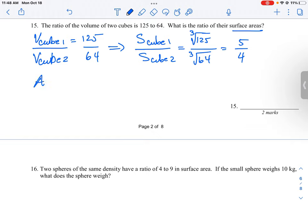So then if we're looking for area, I'll just do capital A for area, and then we're going to do cube 1, and then area for cube 2. So we know area is going to be the side of the cube all squared.